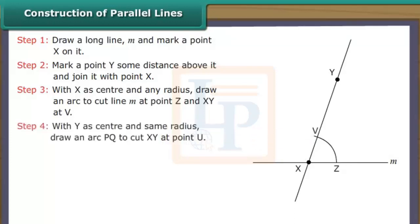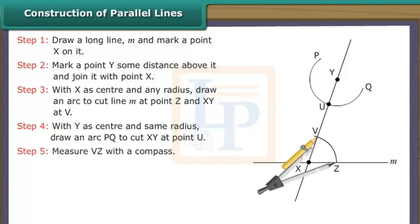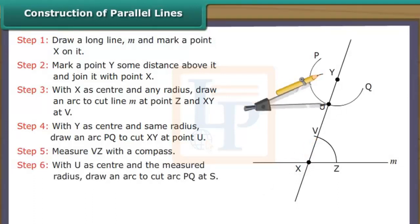With Y as center and the same radius, draw an arc PQ to cut XY at point U. Measure VZ with a compass. With U as center and the measured radius, draw an arc to cut arc PQ at S.